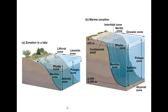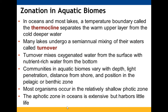Lake zonation differs from ocean zonation — lakes don't have an abyssal zone, and the depth differences are much smaller than in ocean zonation. Aquatic biomes have a temperature boundary called the thermocline separating the warm upper layer from the cold deeper layer. Lakes undergo semi-annual mixing called turnover, which moves oxygenated surface water down and nutrient-rich bottom water up. Aquatic biomes vary with depth, light penetration, distance from shore, and zone positioning. Organisms mostly live in the relatively shallow photic zone; the aphotic zone is extensive but contains little life.